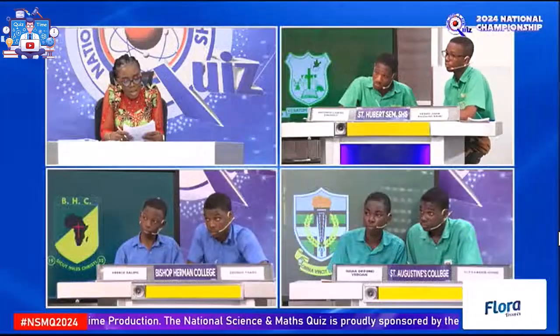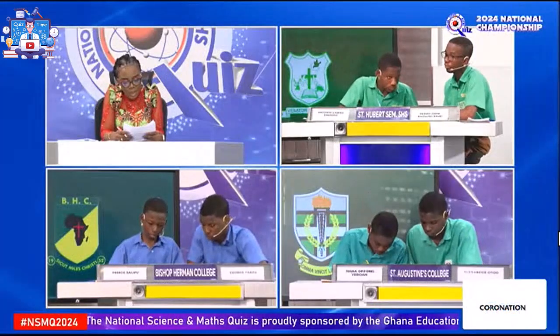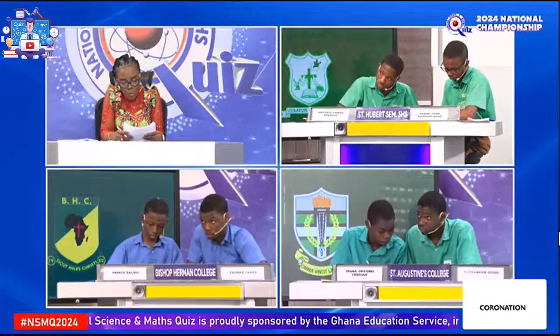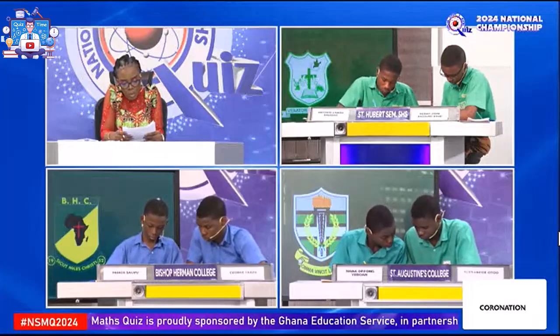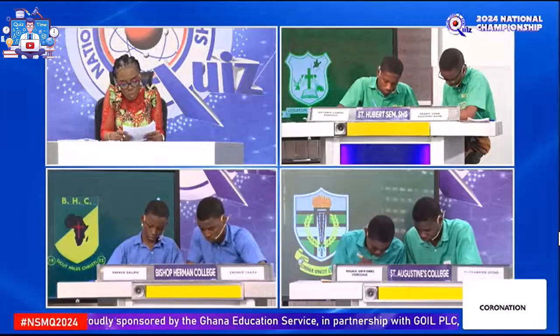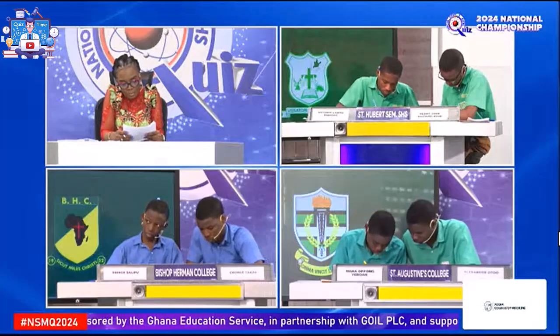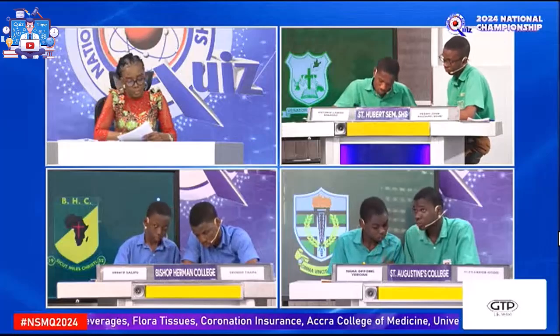Calculate the radius of gyration of a uniform hoop of radius 0.1 meter and mass 2.1 kilograms. Answer: 0.1 meter.